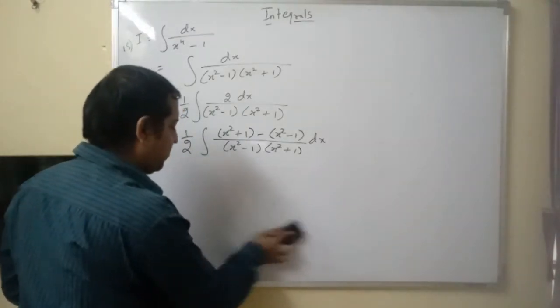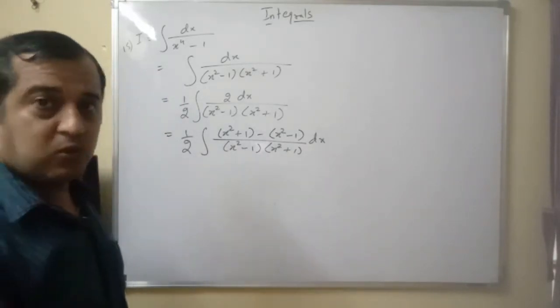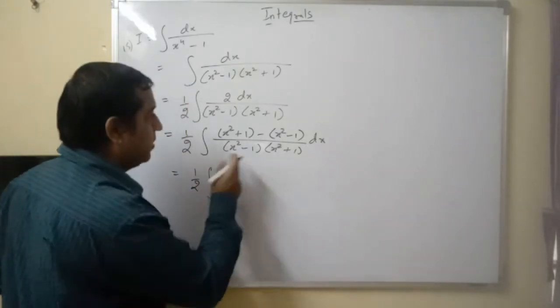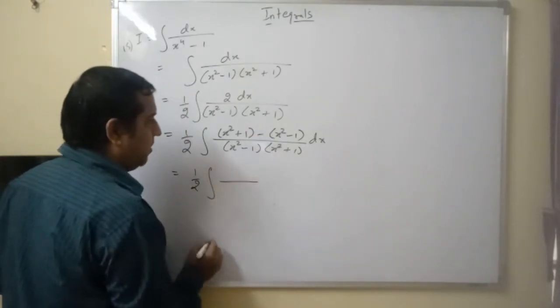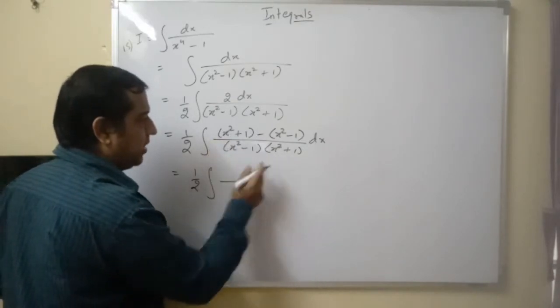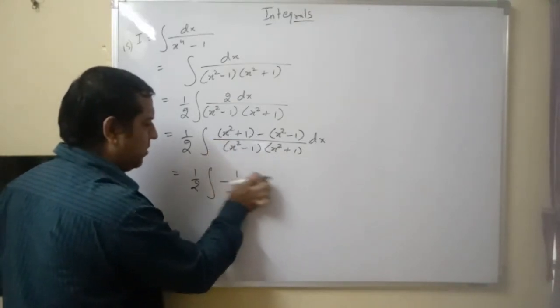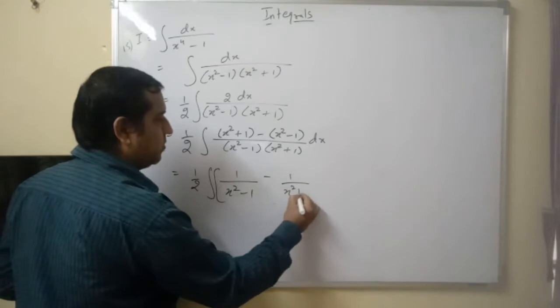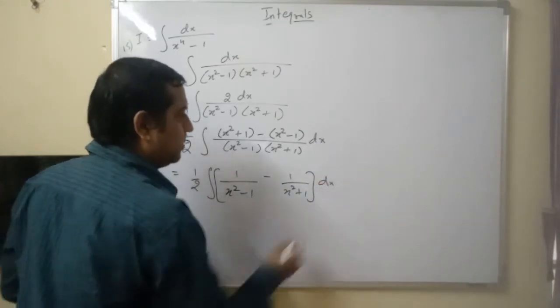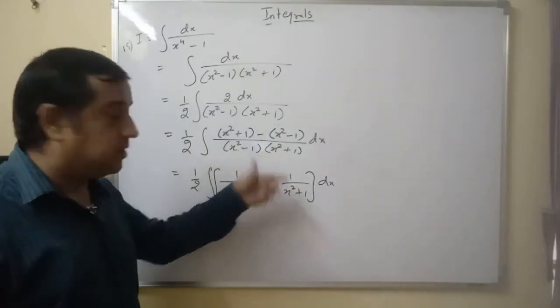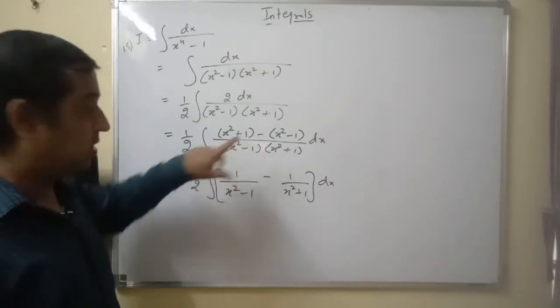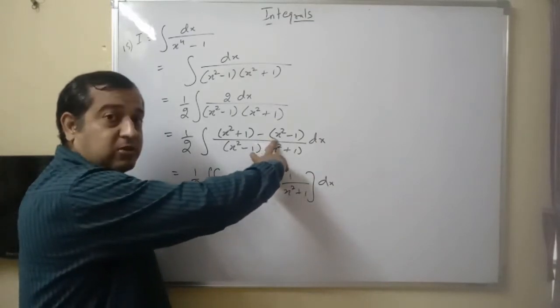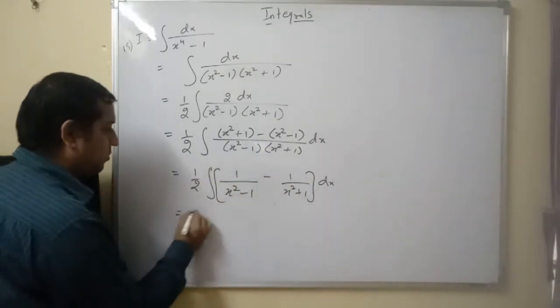You can solve the problem in an easy way. This is 1 by 2 integral. Now, separate the term here. When you separate, x square plus 1 upon this bracket. x square plus 1 cancels, you get 1 upon x square minus 1. And minus. Here x square minus 1 cancels, you get 1 upon x square plus 1 dx. When you separate, two terms are there. First term x square plus 1 and x square plus 1 cancel. In the denominator, you get this term x square minus 1. In the second part, these two terms cancel, x square minus 1, x square minus 1 cancel, you get x square plus 1.